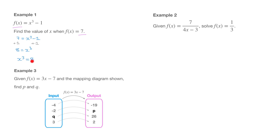We can rewrite that as x cubed equals to 8. Now that I know x cubed equals 8, I need to figure out what x is. To get rid of this power of 3 on the x, we need to take its cube root. But as always, anything we do on one side of the equation, we have to do on the other. So applying the cube root to both sides leads us to x equals the cube root of 8.